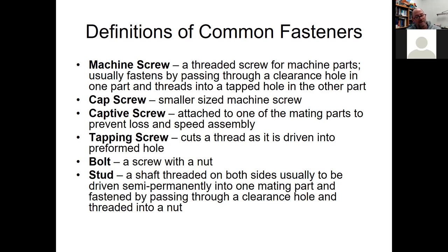A bolt technically passes through two clearance holes and is held by the head on one side and a nut at the other. A stud is a shaft with no head, threaded into a blind hole, with a plate passed over it and fastened with a nut. A good example is engine head studs, threaded into the engine block with the cylinder head passed over them and nuts holding it in place.